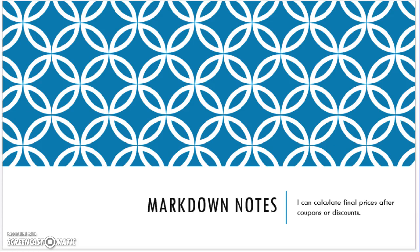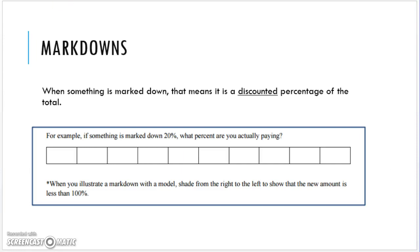A markdown — whatever the discounted percentage is, we're going to find the markdown and see how much it costs. If something is marked down 20%, what percent are you actually paying? We've been talking about this little box chart in class for the last few days. There are 10 sections, with 100% at the far end and 0% at the bottom. If it's marked down 20%, then we're really paying 80% of the cost.